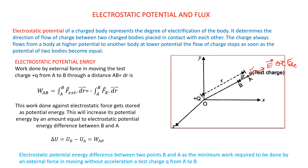This test charge will experience a force along the electric field. Now if we have to bring this charge q from A to B, we have to do some work against the electrostatic field or electrostatic force of repulsion due to charge plus Q. This work done against the electrostatic force of repulsion gets stored in the form of electrostatic potential energy. In order to bring charge q from A to B, we have to apply an external force.